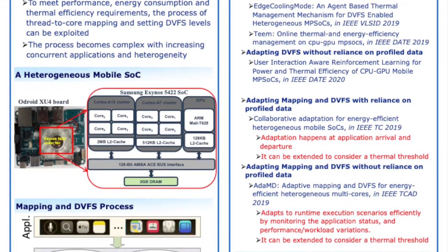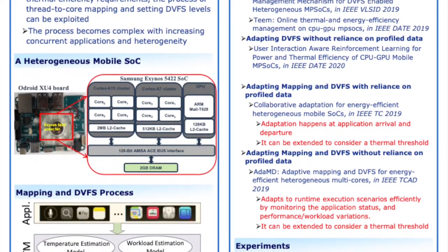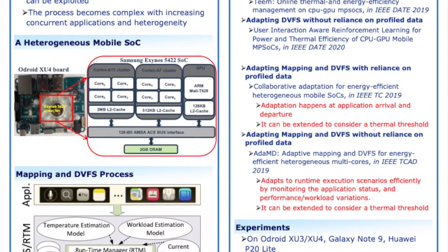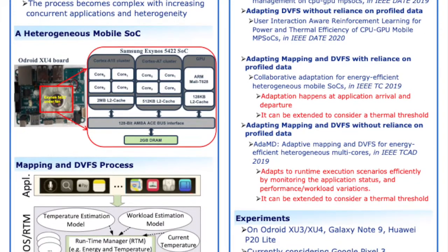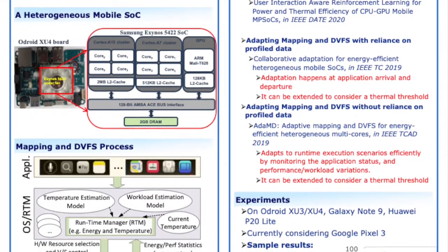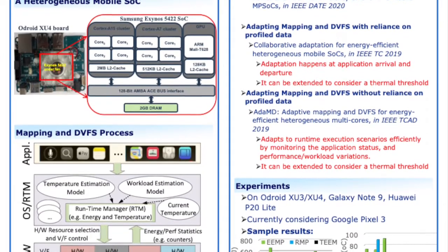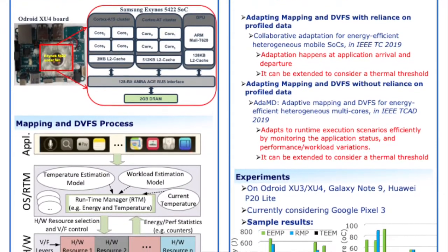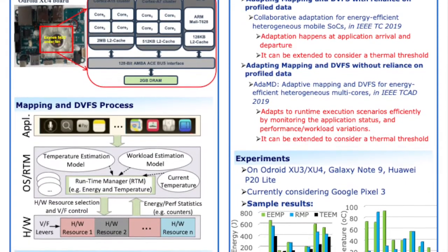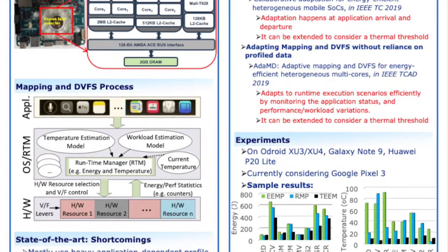Here I have another figure that demonstrates the process where we have distributed everything in three layers: the application, OS and RTM, and the hardware layer. In the hardware layer, you can see there are several hardware resources that support various voltage and frequency levels. In the middle, the OS and RTM layer basically decides which cores are going to be used for a particular application and at what voltage and frequency they will be running.